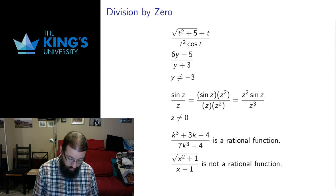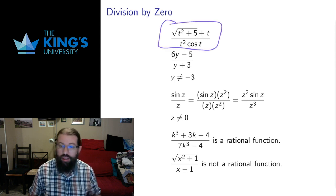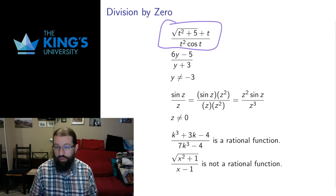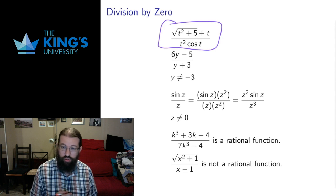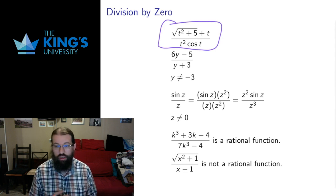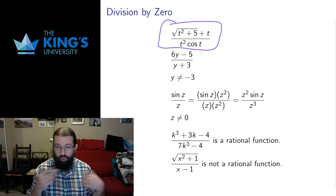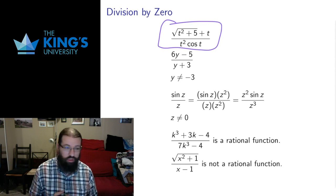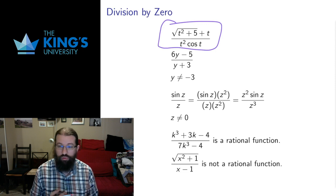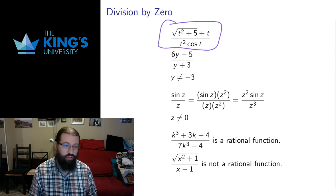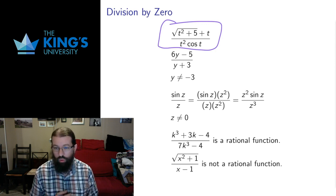What do I mean by fractions with variables? I mean fractions like this — any kind of expression with variables and functions, roots, exponents, whatever you put together in a fraction. It's got a numerator and a denominator. Here the numerator is square root of t squared plus 5, plus t. The denominator is t squared cos t. We want to be able to deal with these expressions. They come up in various places and are very useful in calculus and the development of understanding of functions. We want to be able to work with them comfortably.